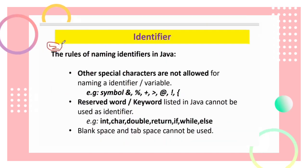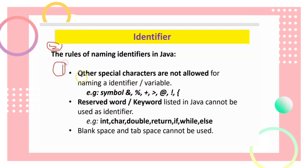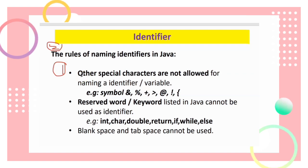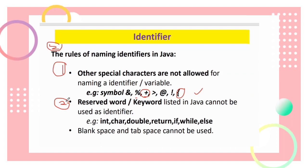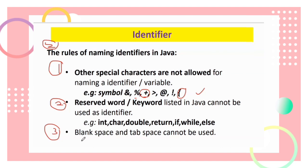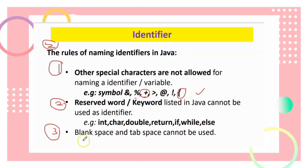Second set of rules for naming identifiers in Java: other special characters are not allowed — for example, percentage, plus, or curly brackets. Second, reserved words or keywords in Java cannot be used as identifiers — for example, int, char, double, if, while, else. Third, blank spaces and tab spaces cannot be used in identifier names.